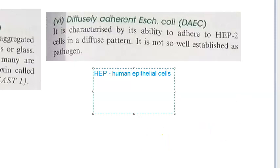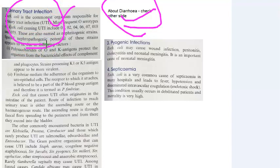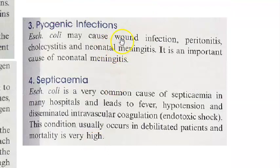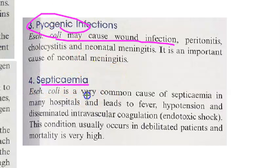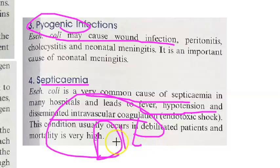So we are done with urinary tract infection — presenting with burning micturition — and diarrhea, which presents with watery stools. Coming to pyogenic infections, E. coli can cause wound infections and pus-forming infections. Septicemia is also very common; it leads to fever, hypotension, and DIC (disseminated intravascular coagulation). Mortality is very high.